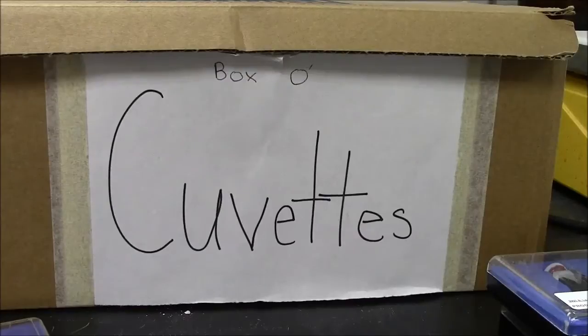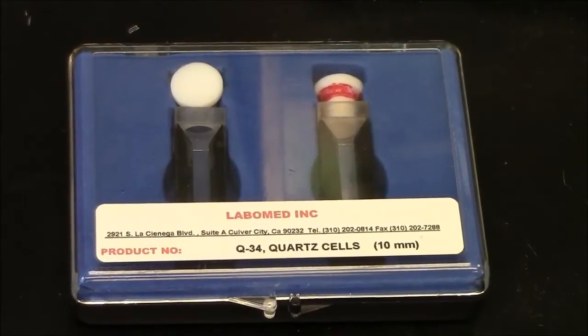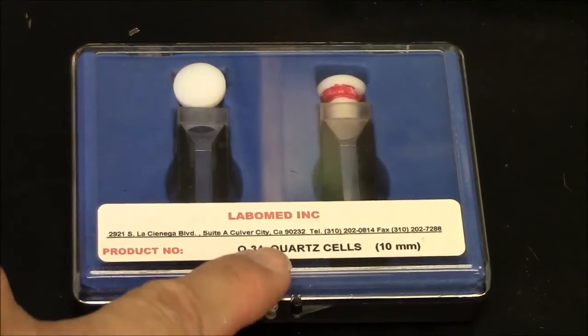To start doing UV spectroscopy, you need a cuvette. Cuvettes can be made of plastic, optical glass, or quartz.